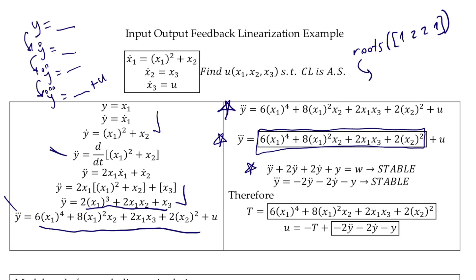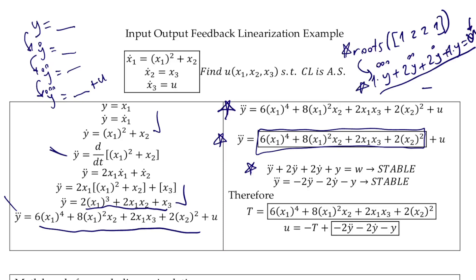You can see why the dynamics are stable by typing roots [1, 2, 2, 1], which corresponds to the characteristic equation: y-triple-dot plus 2*y-double-dot plus 2*y-dot plus y = 0 (plus some input w as a disturbance term). This dynamics with coefficients [1, 2, 2, 1] is stable — all real parts of the eigenvalues are negative, which is fine.